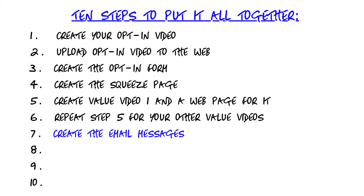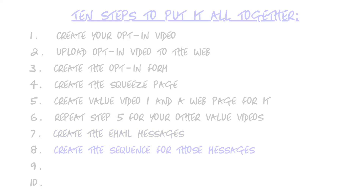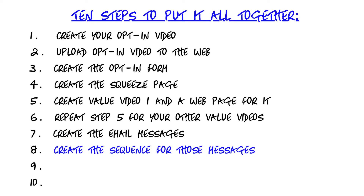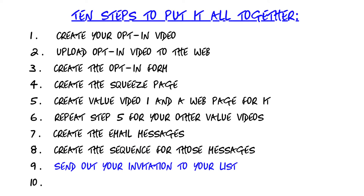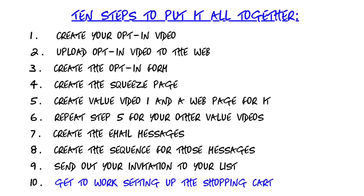Seven: create the messages that people will receive to prompt them to get the second and third videos and your sales video. Step eight: create the sequencing of those messages so that people will receive them at the right times. In step nine: create and send out your first email to your list, introducing them to this video value series. And then step ten: unless you already have a sales page linked to your shopping cart, get to work on that step during the 10 to 14 day period that people are watching your series.